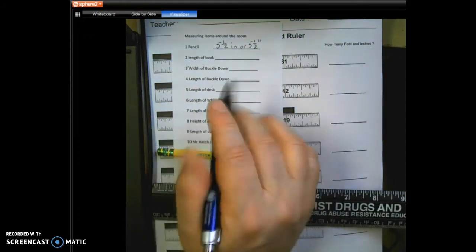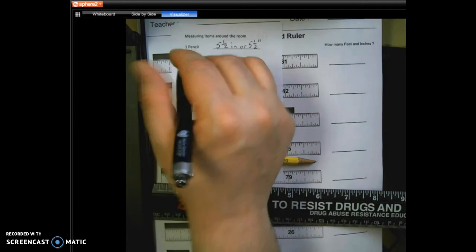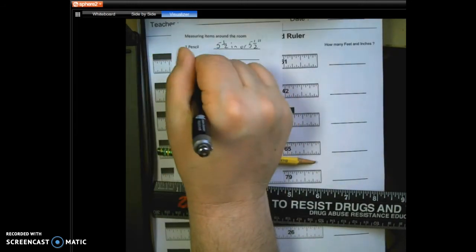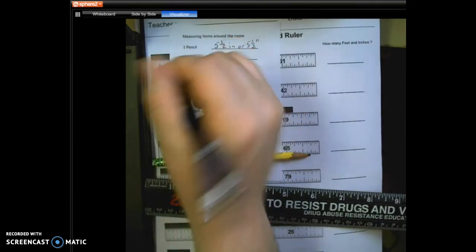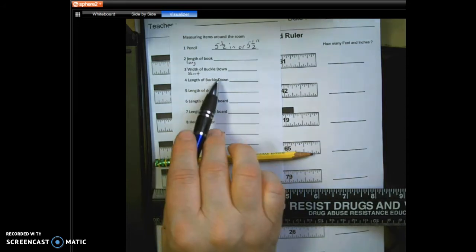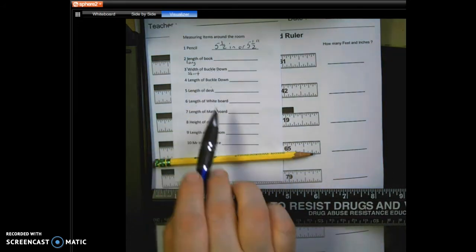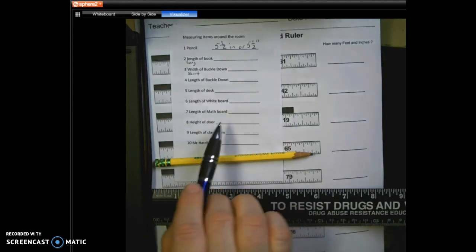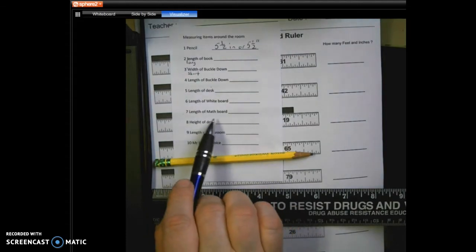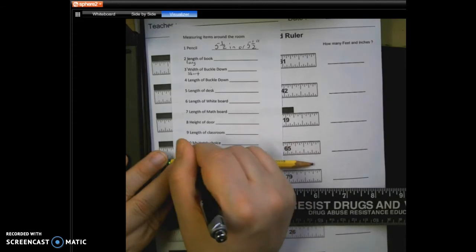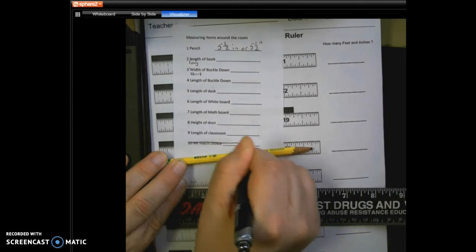They were also supposed to measure the length of the book. Length means the long side of the book; width is the shorter side or the wide side. So they were supposed to have measured one for the buckle-down book. This is a book that we have in the classroom. They were supposed to measure the length of a desk, a whiteboard that we have in the front of the room, a math board where we have work, the height of our door, the length of the classroom. And for this last one, Mr. Hatch's choice, we really didn't get to that one, so I'm going to cross that one off.